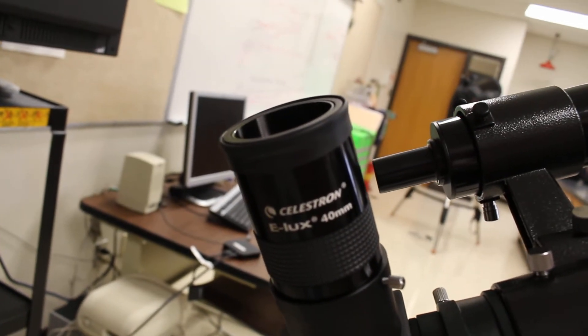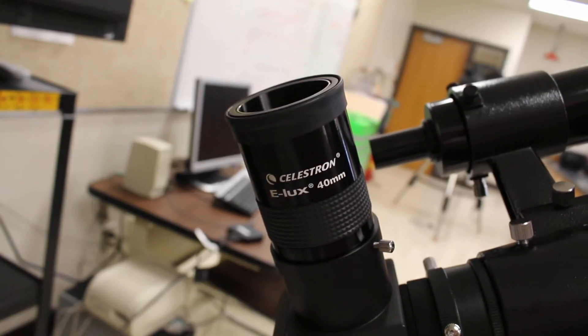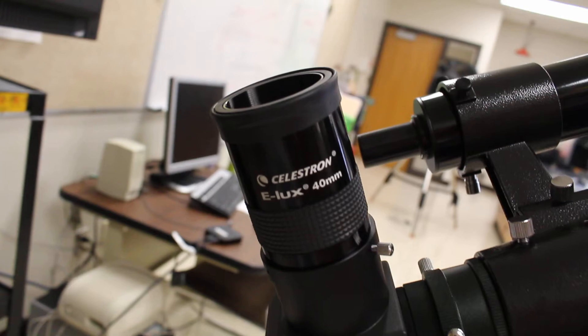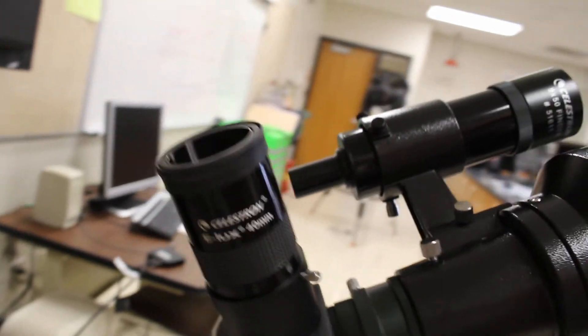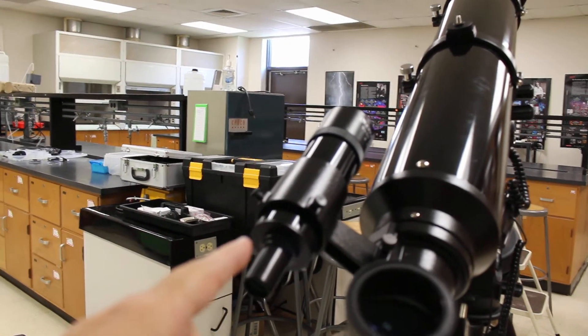This one is 40 millimeters. It gives you a nice kind of wide view. The smaller the number, the more the magnification and the smaller the view. We have kind of like a little mini telescope outside of here. This actually is our finder or our spotter scope.